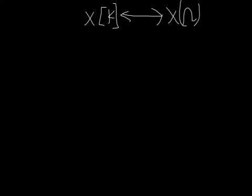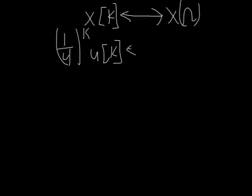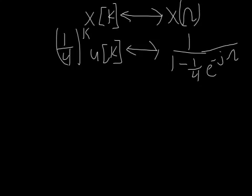Our base function is (1/4)^k times u[k], and it transforms to 1 over (1 - 1/4 e^(-jω)). You can just look this up. It's a common transform. It's in any kind of book or any kind of table you can find online.